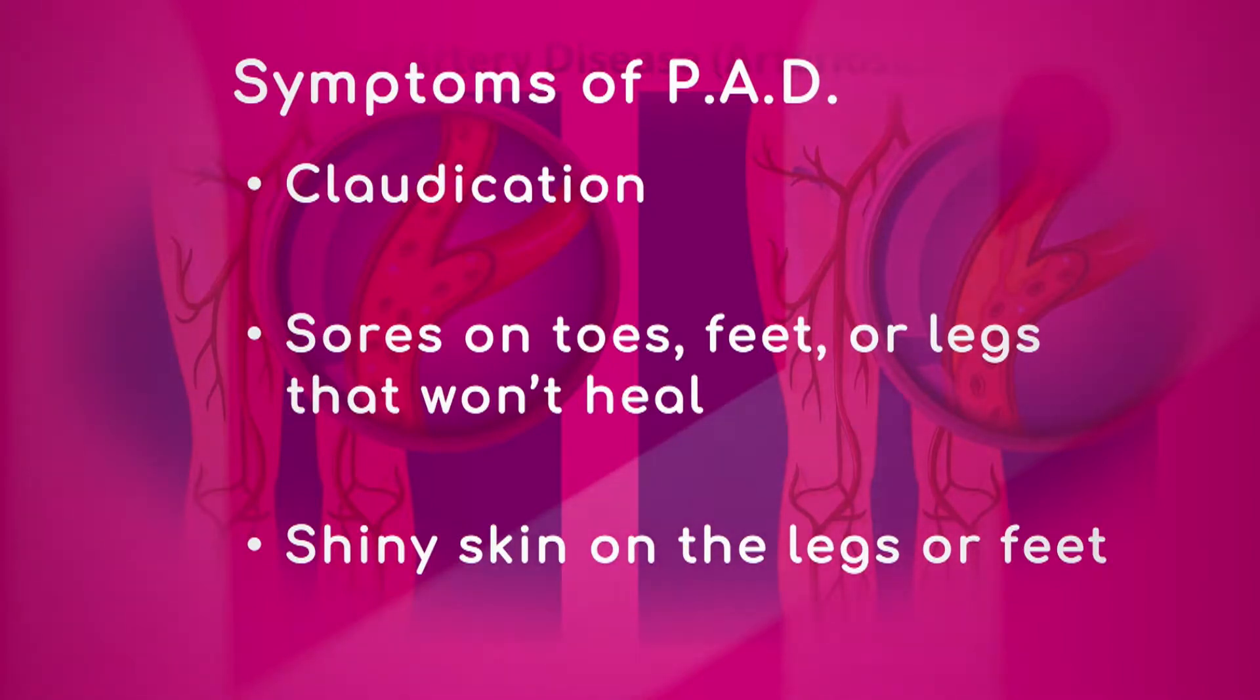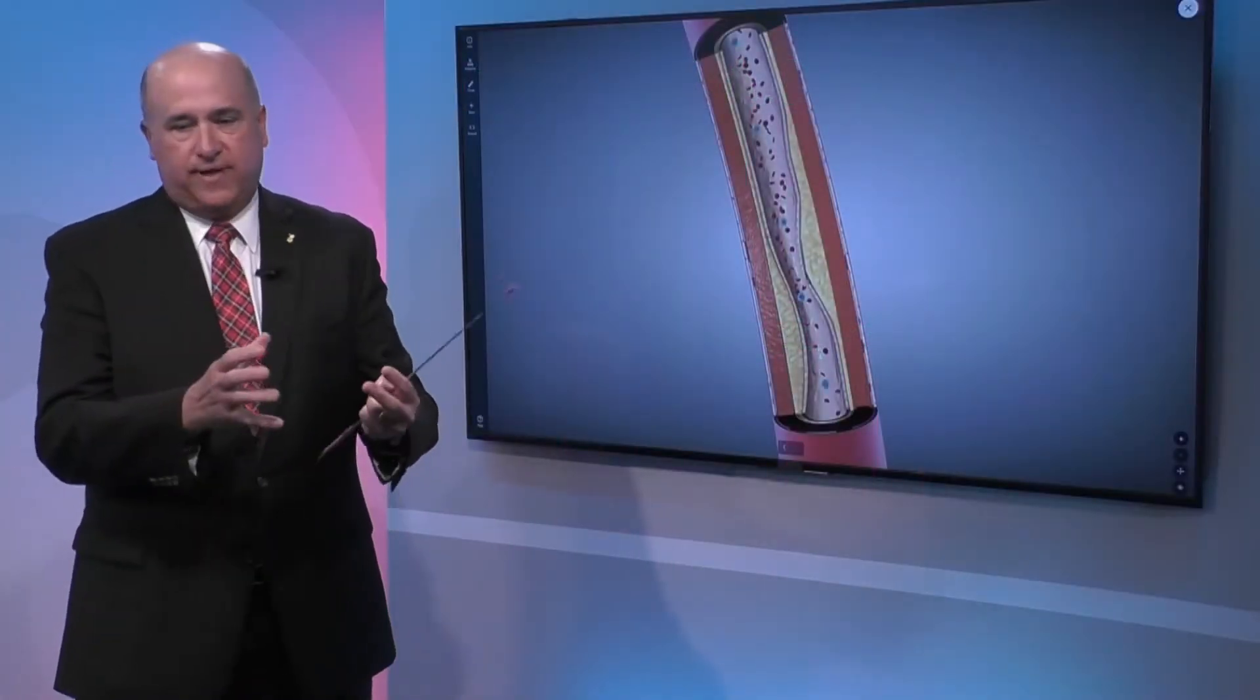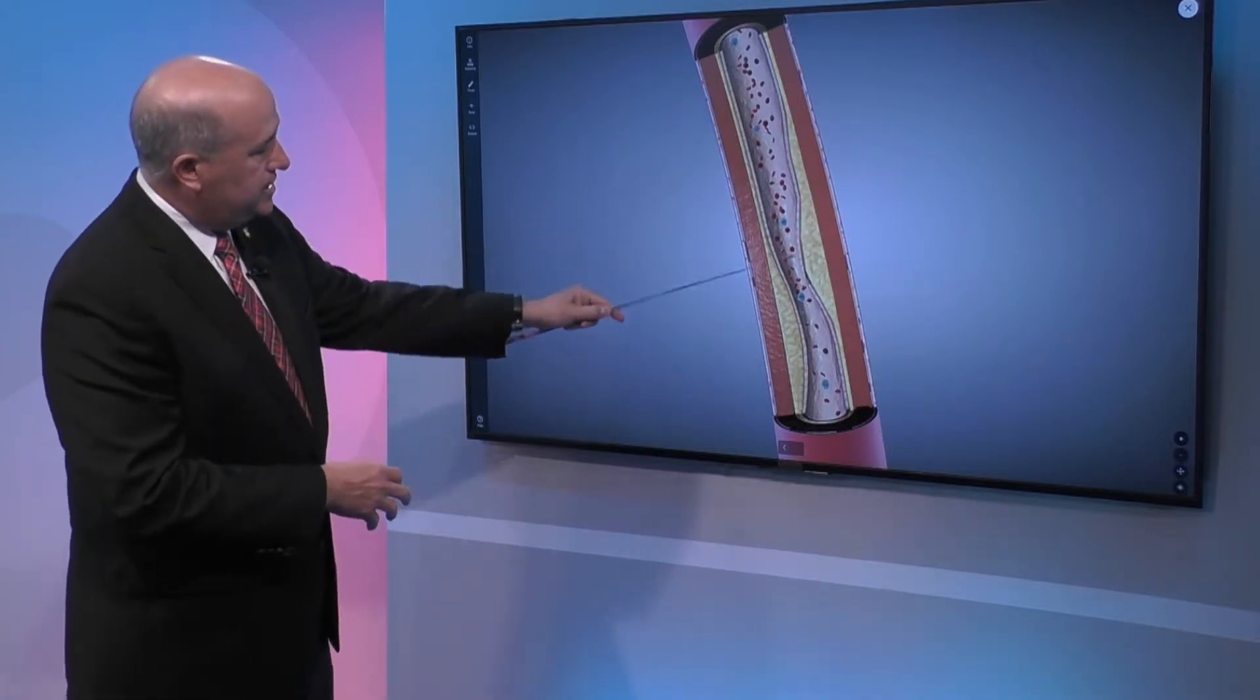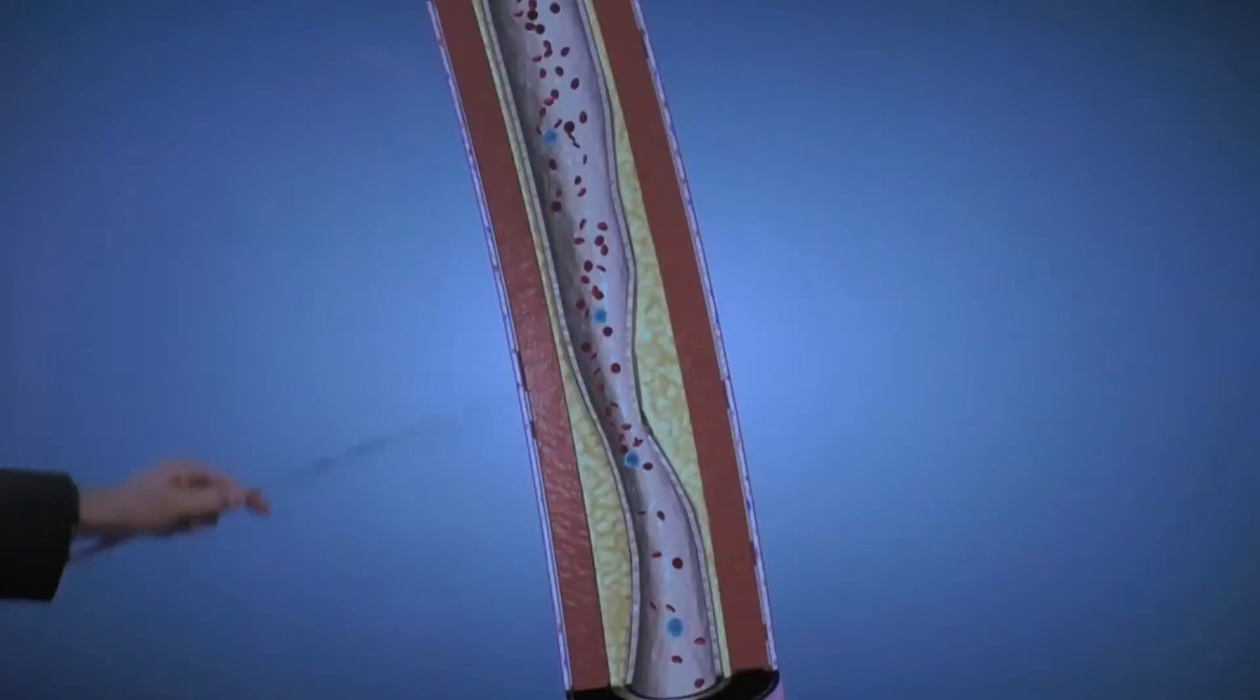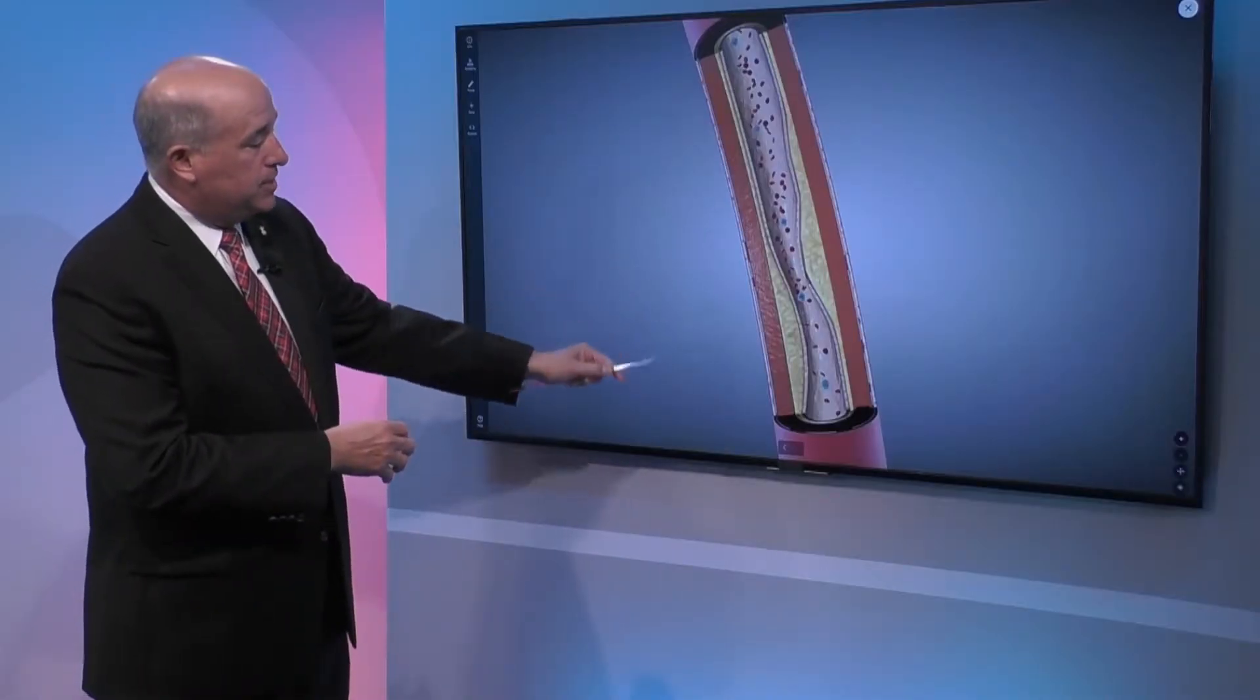So in peripheral arterial disease, the major complication is a blockage of the arteries by cholesterol plaque causing the blood flow to diminish to the extremities. When that occurs, you've got much less blood flow.